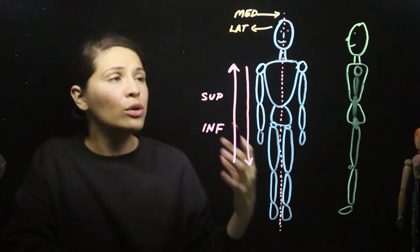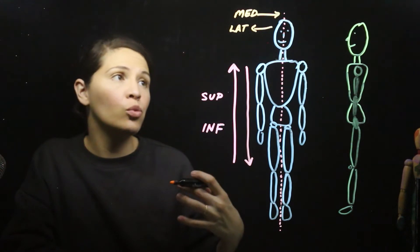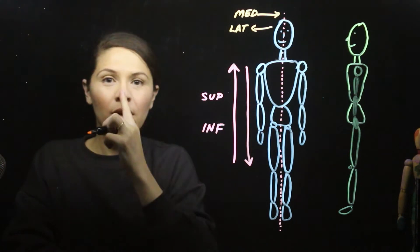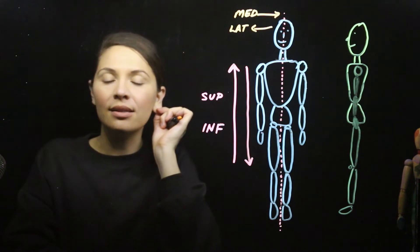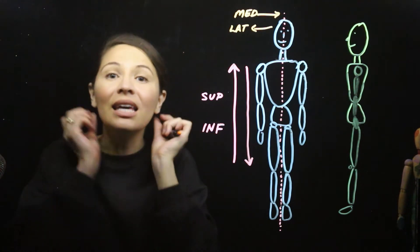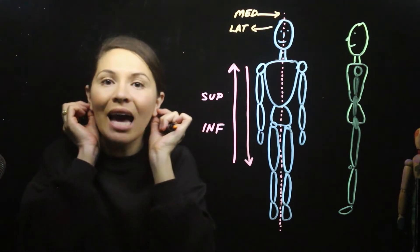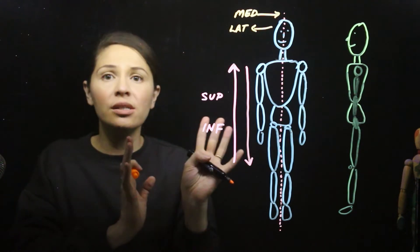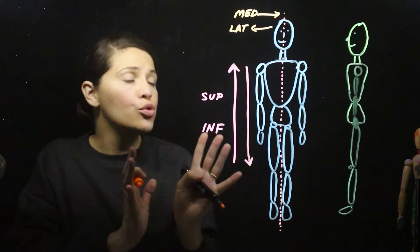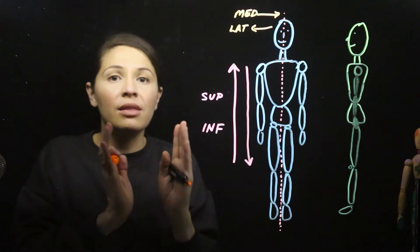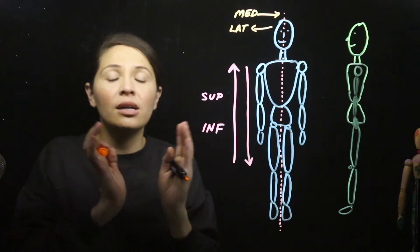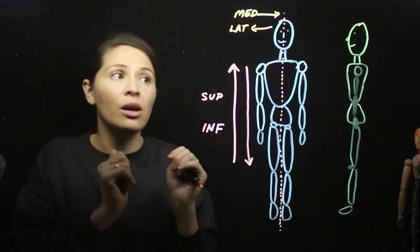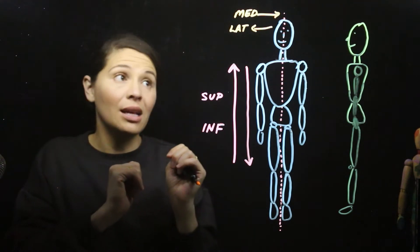A good example of medial and lateral is that the nose is medial to the ears, and you could say that the ears are lateral to the nose. Generally, things closer to the midline would be termed medial, and things further away from the midline would be termed lateral.